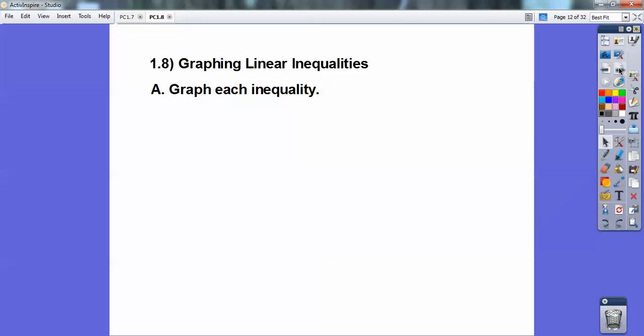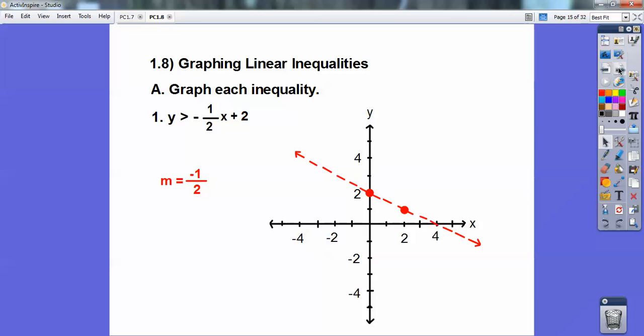So now we're going to graph these linear inequalities. So let's just graph each one of these. Y is greater than. This is an Algebra 1 lesson. I just taught this lesson in my Algebra 1 class not too long ago. So I'm going to graph that plus 2 first. And then I'm going to use the slope down 1 to the right 2. Down 1 to the right 2. And it's a dotted line.